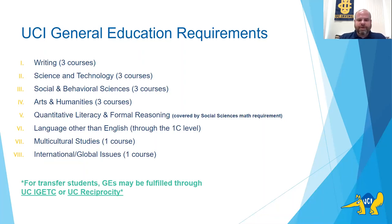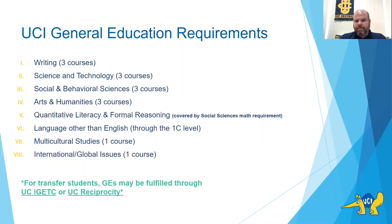For many of you coming from California community colleges, you may be familiar with UCI IGETC certification. If you're certified for UCI IGETC, you may not have to complete many of these GE categories — most may already be satisfied. Similarly, if you're transferring from another UC campus like Riverside, Santa Cruz, or UCLA, and we can get a letter from your UC campus confirming you've completed their GE requirements, then you may have most of these categories satisfied as well through UC reciprocity.